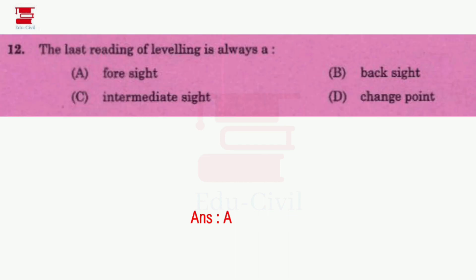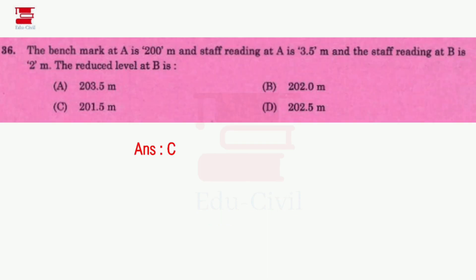The last reading of leveling is always the foresight. The first reading is the backside. Last reading — option A, foresight — is the correct answer. The backside, foresight, and intermediate readings are the types.